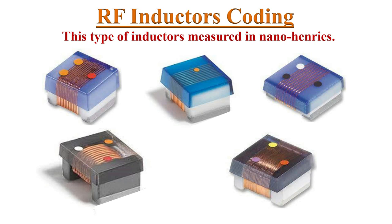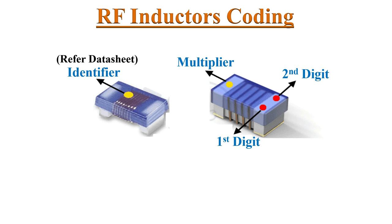Radio frequency inductors are very small in size, so just like SMD inductors, RF inductor values are marked with single or multiple colored dots. The value of RF inductors is measured in nano-Henrys. If there is only one colored dot printed on an RF inductor, the inductance and other specifications can be found in the manufacturer's data sheet.